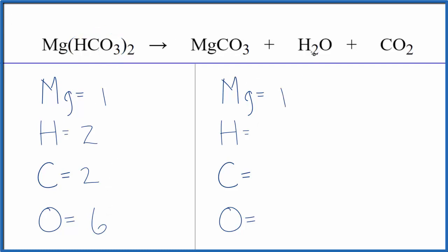On the product side, we have the one magnesium, two hydrogens, one carbon here, plus, be careful, we have this carbon here in the carbon dioxide. That gives us two, and then oxygen's three, plus the one, plus the two. That gives us six oxygen atoms.